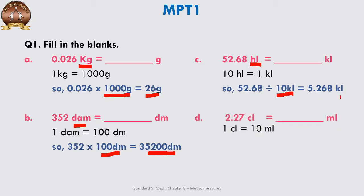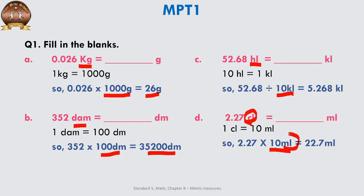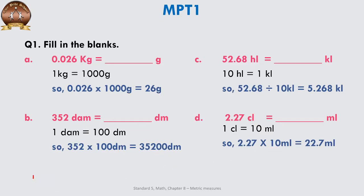In part D, we have 2.27 cl. Cl means centilitre and ml means millilitre. 1 cl equals 10 millilitres. Cl is a bigger unit — centi is chocolate and milli is milk. Chocolate comes on the left and is a bigger unit; milli is a smaller unit. So we multiply by 10 and convert cl into ml. The decimal moves one place to the right, so the answer becomes 22.7 millilitres.